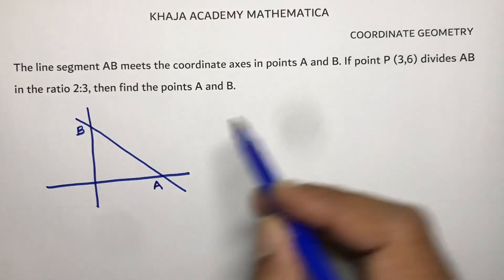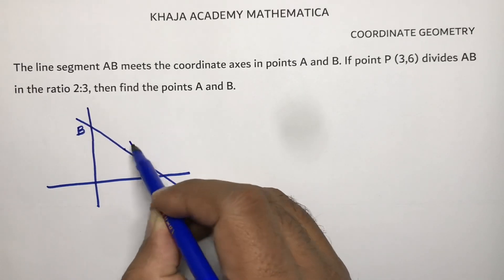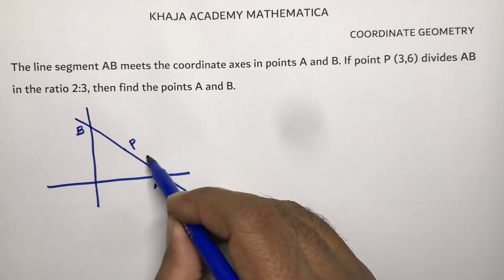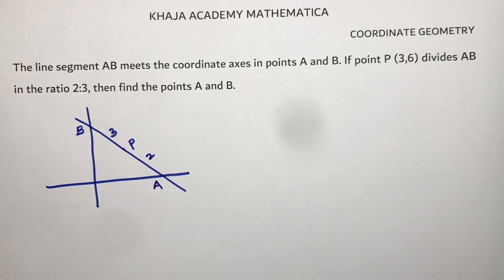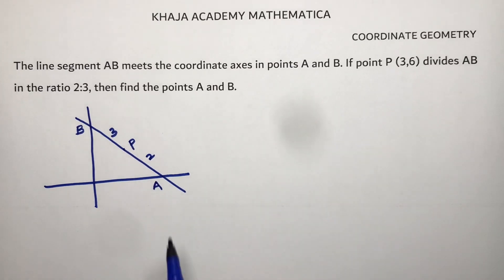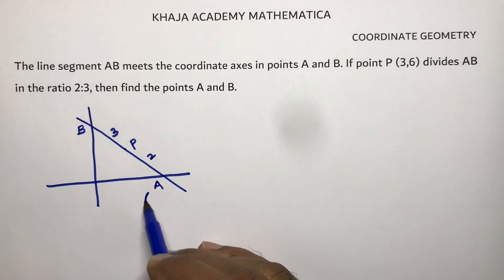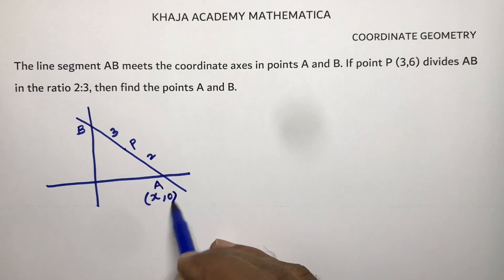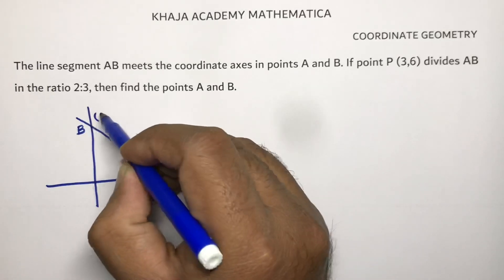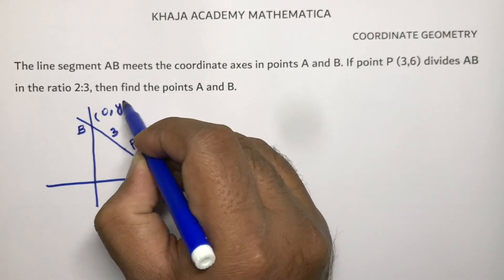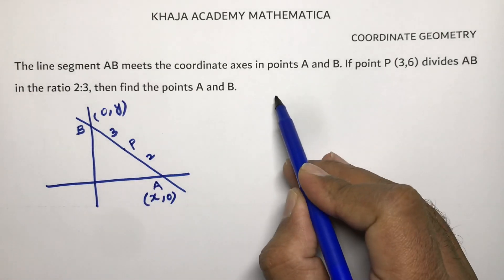P divides AB in the ratio 2:3, then find the points A and B. It's very clear that A is on the x-axis, so A I'll consider as (x, 0). B is on the y-axis, so B I'll take it as (0, y).